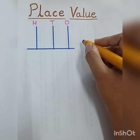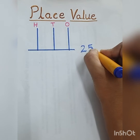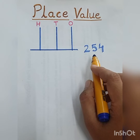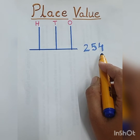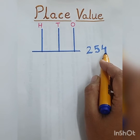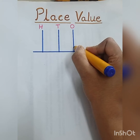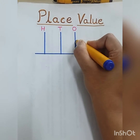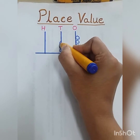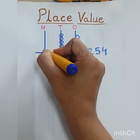Here I am writing one number — 254. Now I want to write the place value of each digit. You have studied how to write this number on the abacus. Now 4 is at the unit place, 5 is at the tens place, and 2 is at the hundreds place.